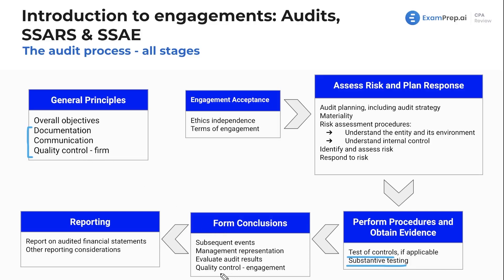Quality control means making sure that we did the engagement properly. Before we can report on anything, we want a quality control review partner to come in and verify the audit was done correctly before we give our end deliverable. If it wasn't done properly, we may have to go back and test more or reassess. For reporting, we report on audited financial statements or other reporting considerations — whether that's an audit opinion, a list of procedures, findings, or a package of financial statements, which can vary widely depending on the engagement type.